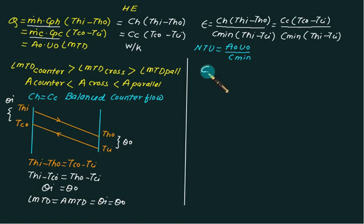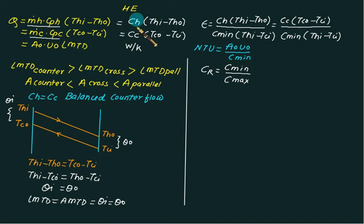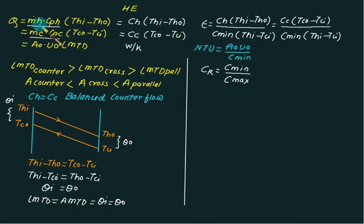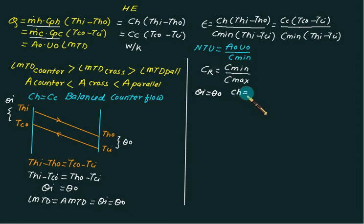When we define the normal capacity ratio, we call it C_R = C_minimum divided by C_maximum. We have to calculate C_H and C_C. If these two values are the same — theta equals theta — then C_R equals 1.